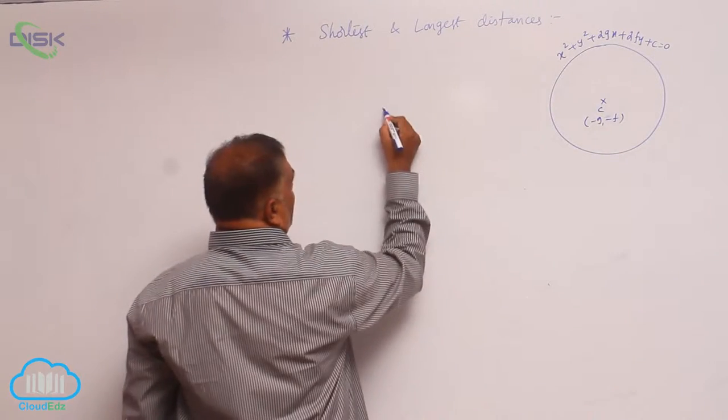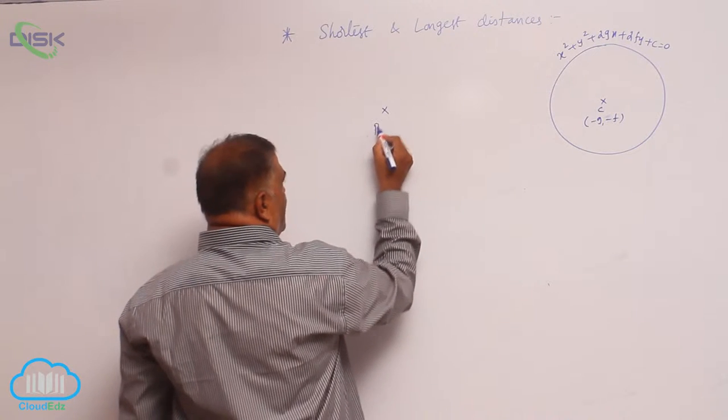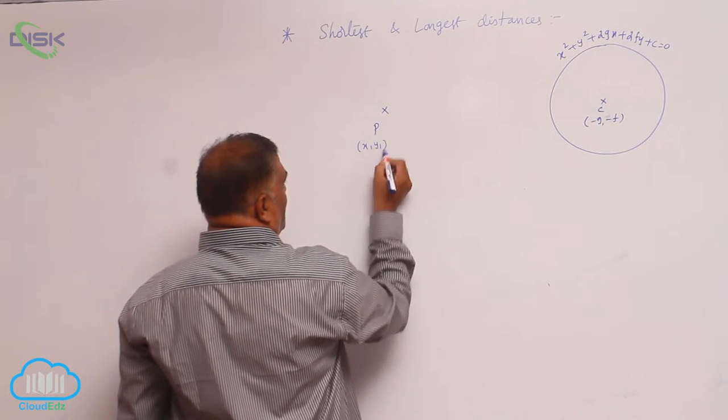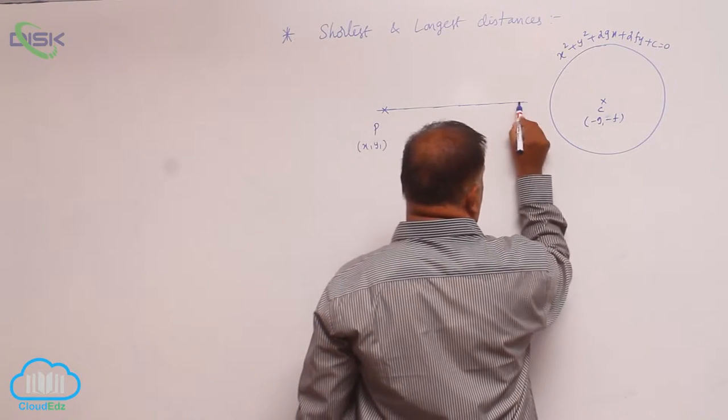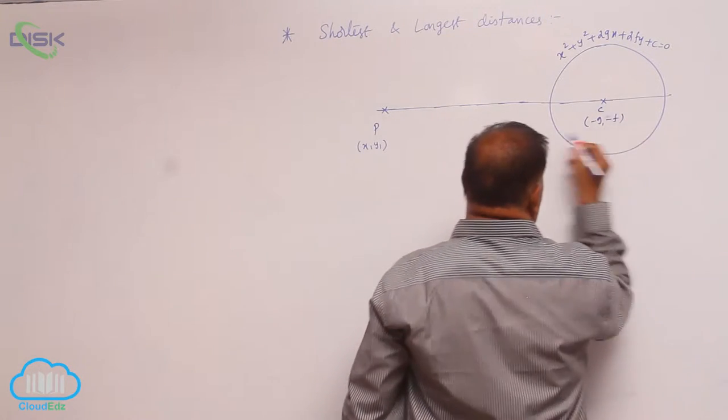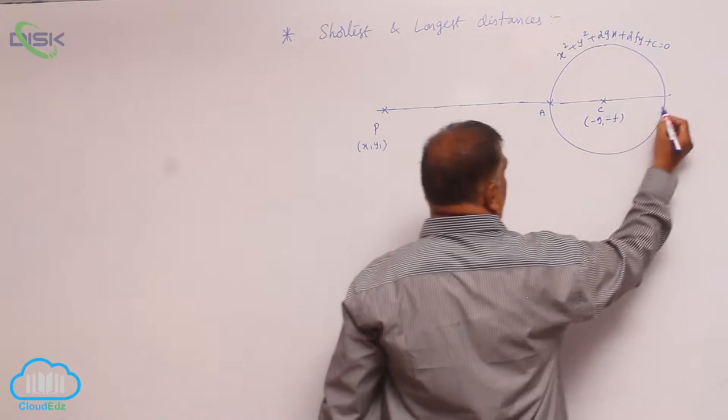Now let us consider a point P outside at x1 comma y1. If you draw a straight line through the center of the circle, it will meet the circle in two points A and B.